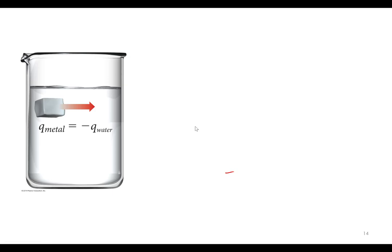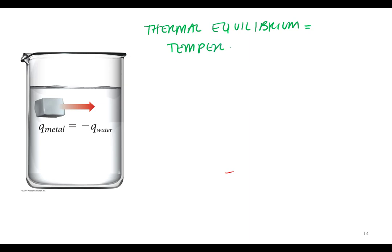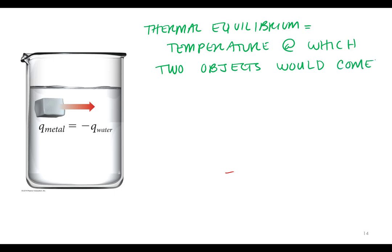We can also use that equation, or our handy-dandy heat equation, to calculate the thermal equilibrium that two objects would come to. Thermal equilibrium is a fancy way of saying that if two objects at different temperatures come into contact, they'll eventually come to the same temperature — the temperature at which two objects arrive after heat is transferred.